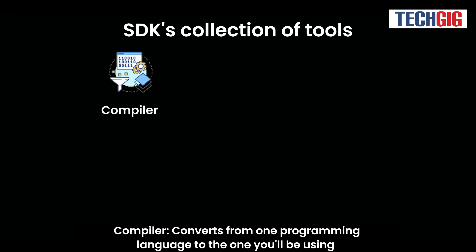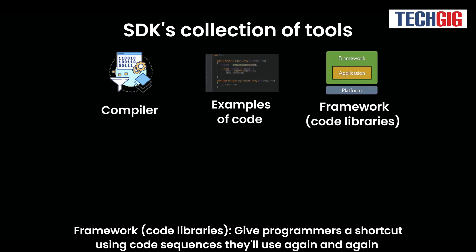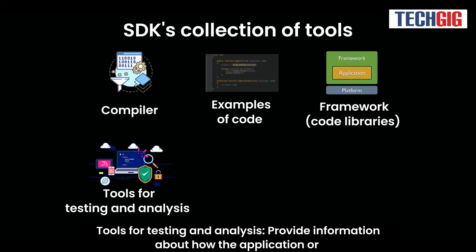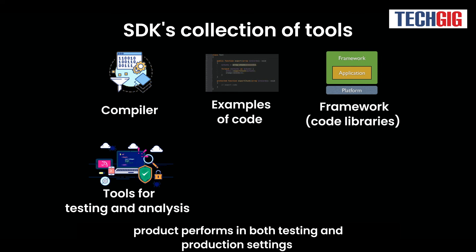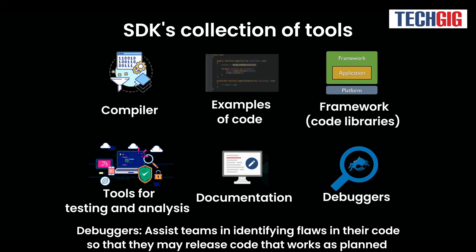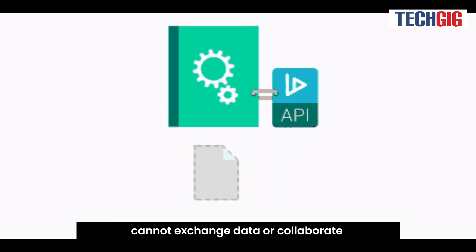A compiler converts from one programming language to the one you'll be using. Code libraries give programmers a shortcut using code sequences they'll use again and again. Tools for testing and analysis provide information about how the application or product performs in both testing and production settings. Documentation provides instructions to developers that they can refer to as they work. Debuggers assist teams in identifying flaws in their code so that they may release code that works as planned. At least one API is frequently provided in the SDK, since without it, applications cannot exchange data or collaborate.